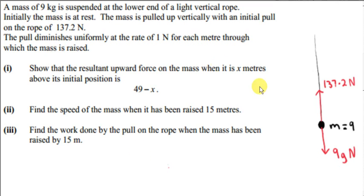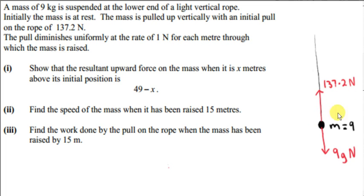A mass of 9 kilograms is suspended at the lower end of a light vertical rope. Initially, the mass is at rest. The mass is pulled up vertically with an initial pull on the rope of 137.2 Newtons. Here's the initial situation at t equals 0. The weight of the mass is 9g Newtons — approximately 9 times 10, or 90 Newtons. The upward pull at this instant is 137.2 Newtons, which is greater than the weight.